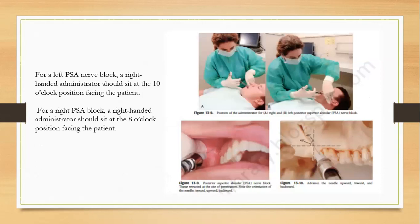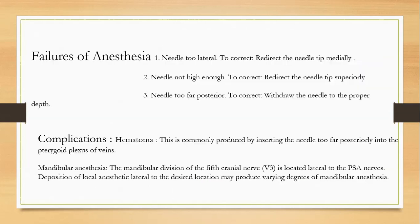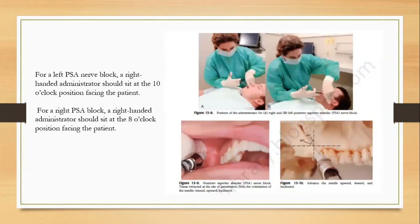For a left PSA nerve block, a right-handed administrator should sit at the 10 o'clock position facing the patient; for a right PSA block, sit at the 8 o'clock position. The needle is advanced at a 45-degree angulation from the occlusal plane, with three movements: inward, upward, and backward — passing the syringe inward, upward, and backward at 45 degrees from the occlusal plane of the molars.